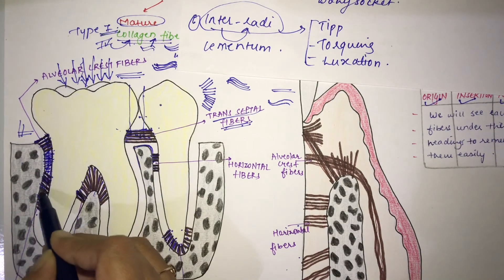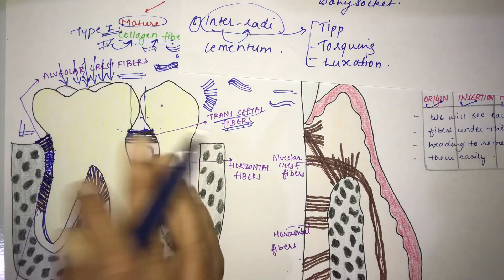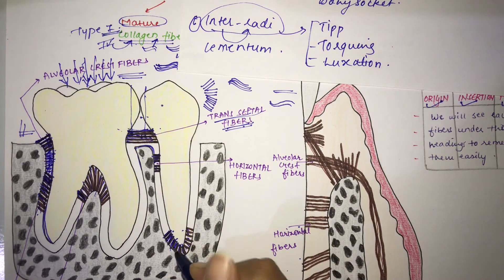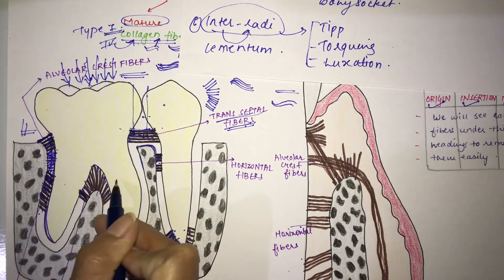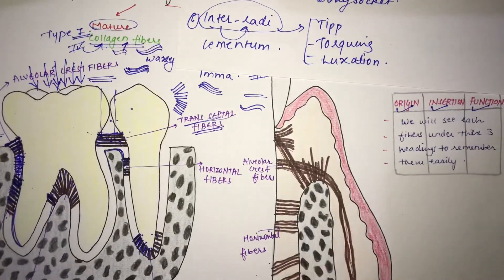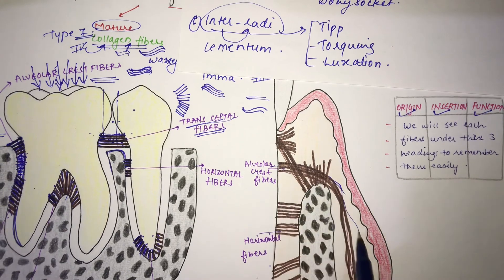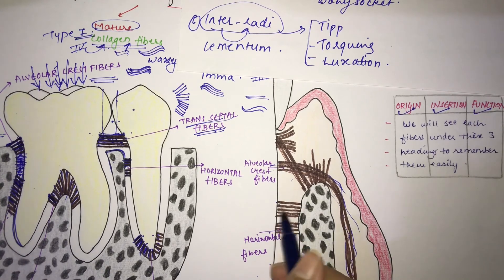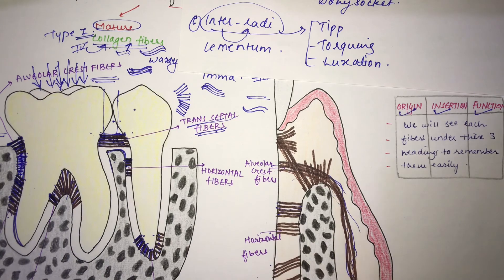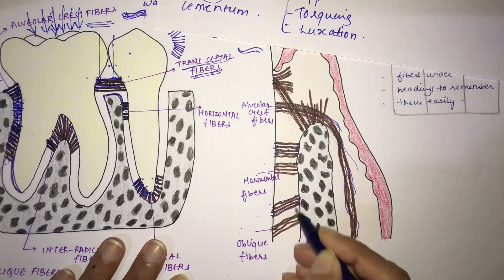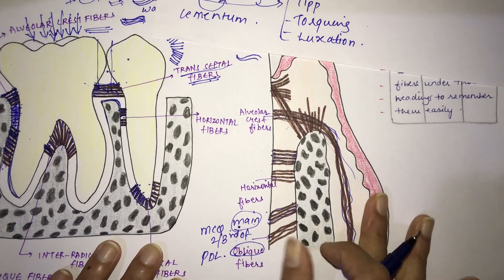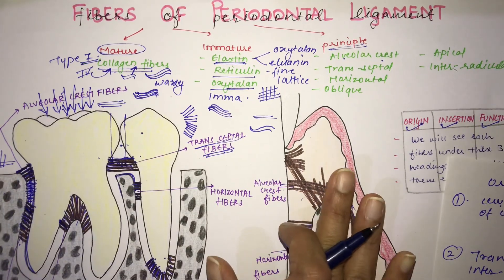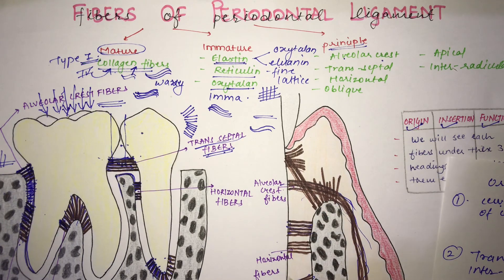To recap: alveolar crest fibers are at the crest, horizontal fibers run horizontally, oblique fibers run obliquely forming the main bulk, transseptal fibers connect adjacent teeth, apical fibers are at the apex, and interradicular fibers are between the roots. This was all about the fibers of the periodontal ligament. I hope you found this video helpful — please like, comment, share, and subscribe. Thank you!